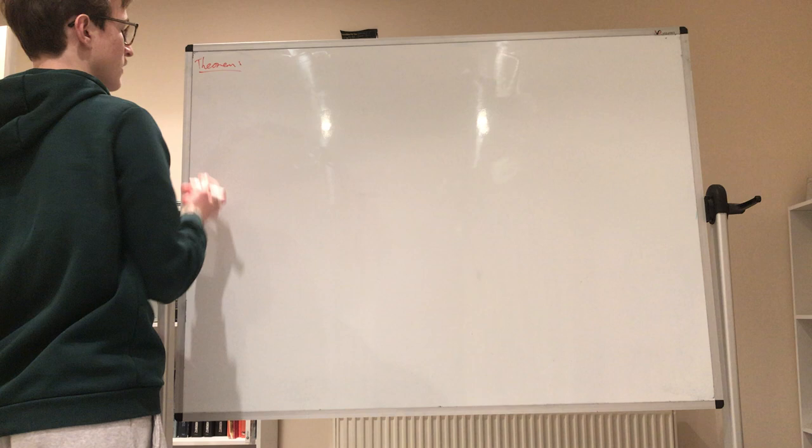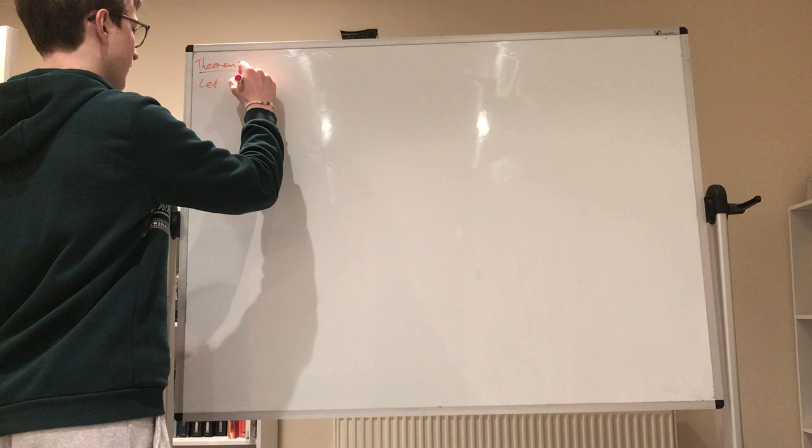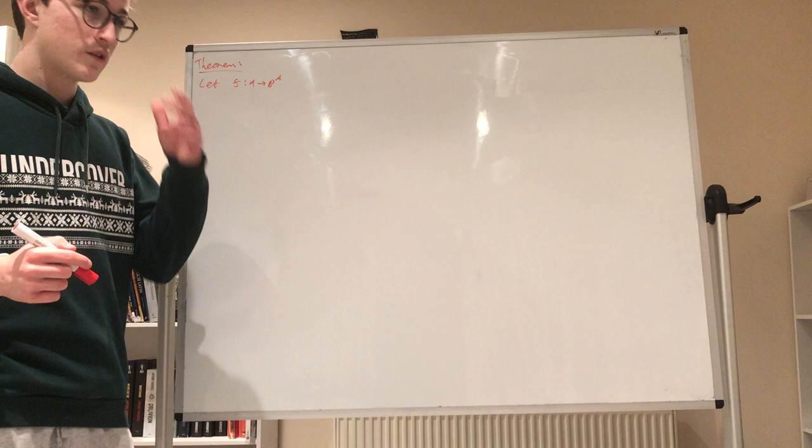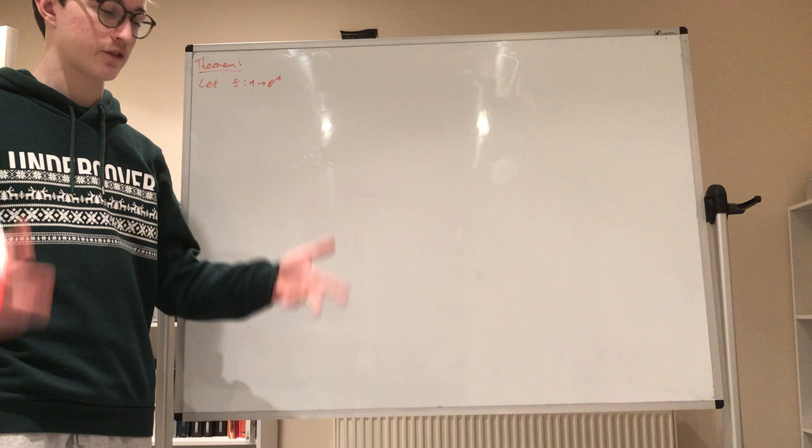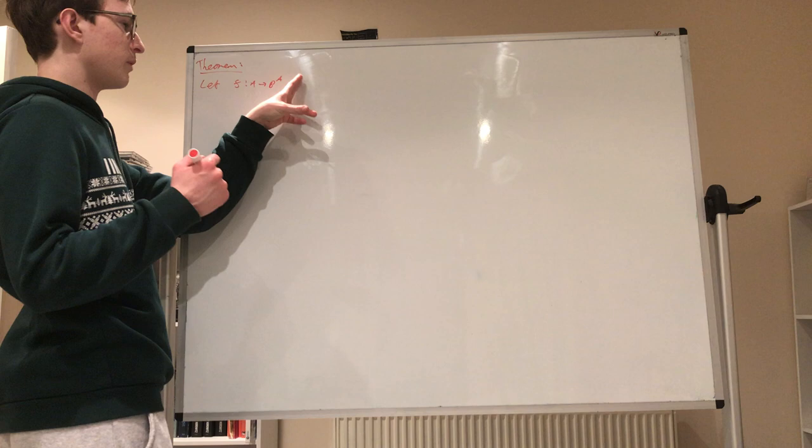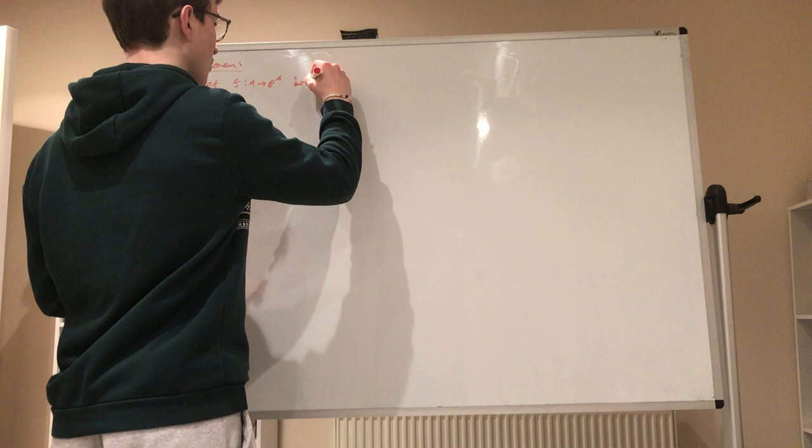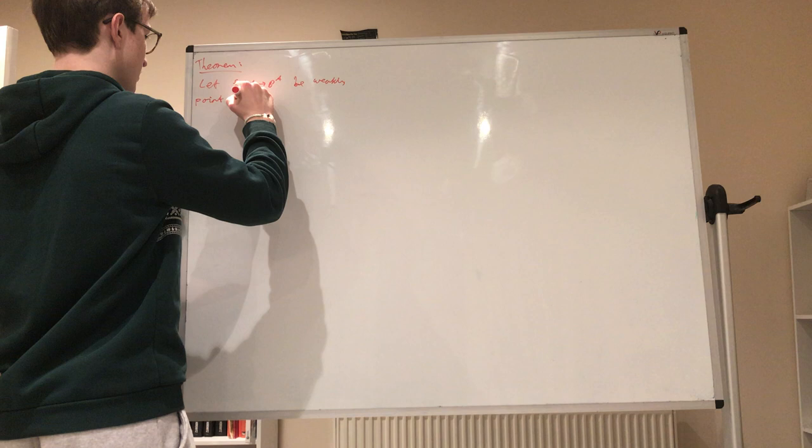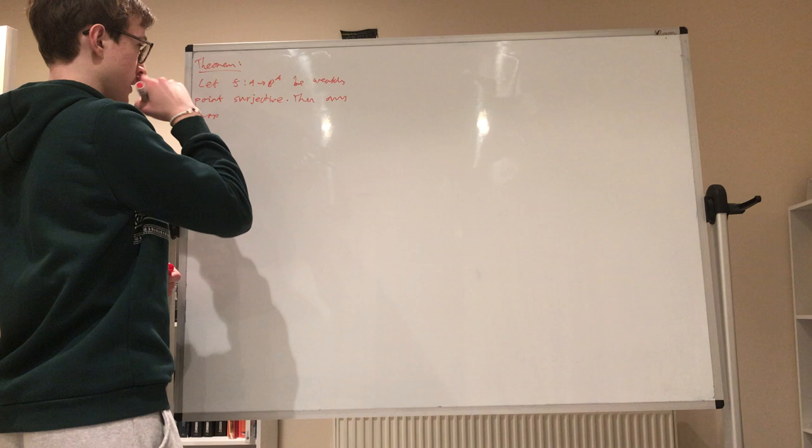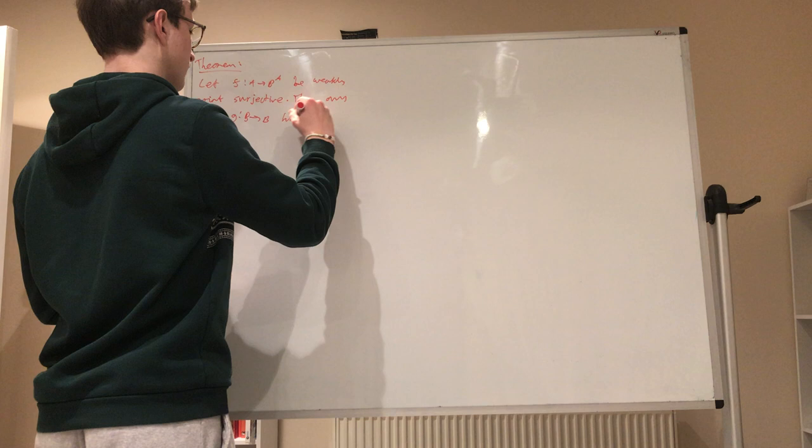So firstly, here's the technical statement of the theorem. What it says is, let F from A to B to the A, and whenever I say A and B, those are objects of some category C, which has an appropriate notion of products and stuff like that. So let F be a map from A to this function space B to the A, and I'm going to use a term which I will define in a second, weakly point surjective. Then, any map G from B to itself has a fixed point.